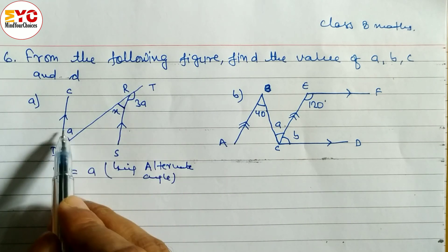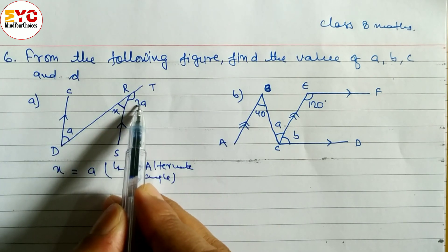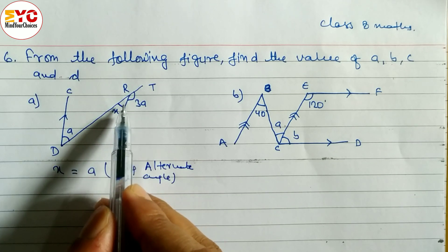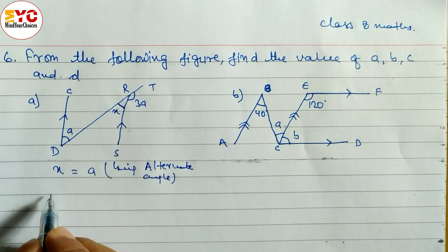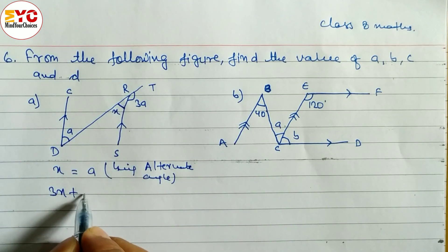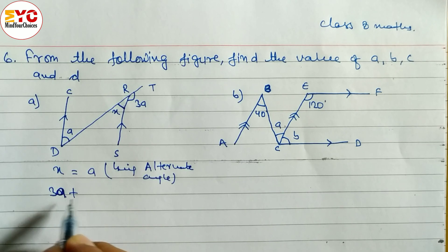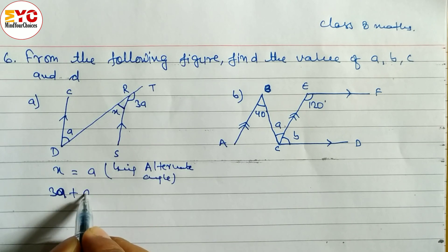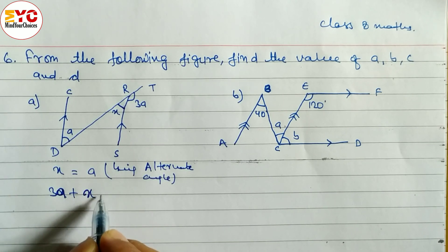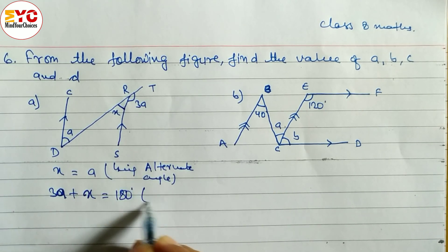a is equal to x, being alternate. Now we have to find out the value of a. So, 3a plus x — what we can write here is 3a plus x.